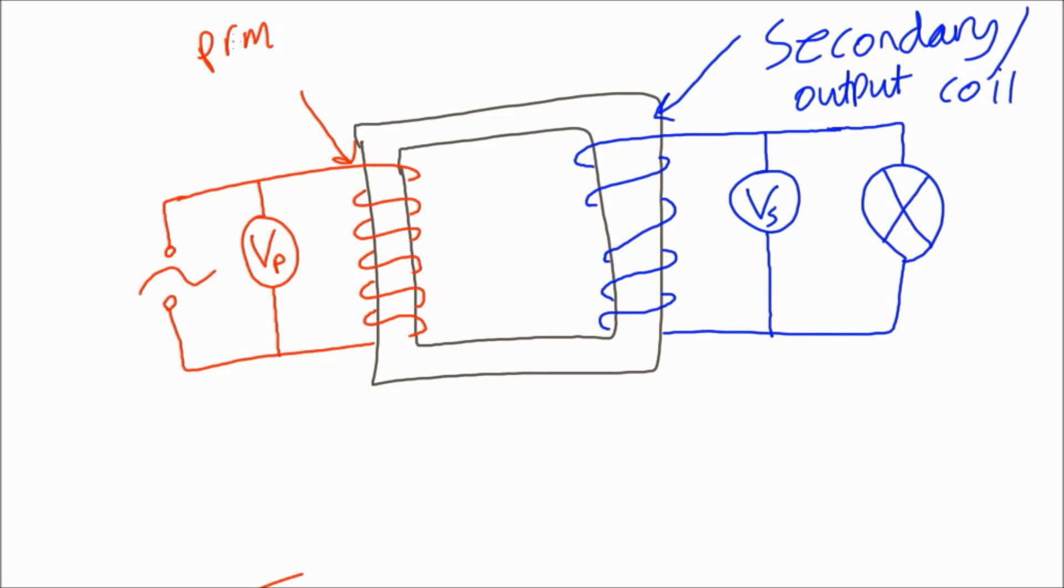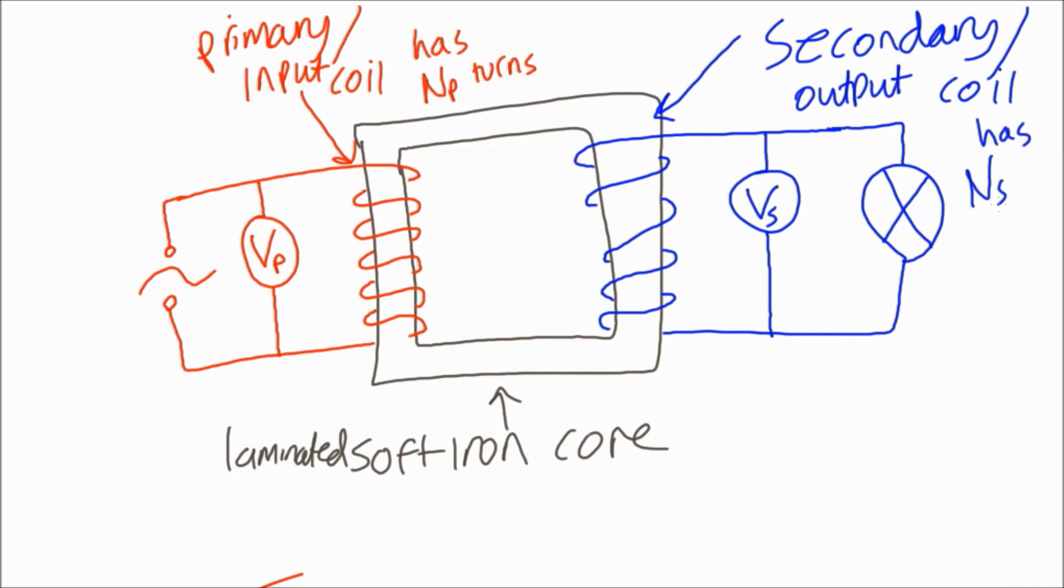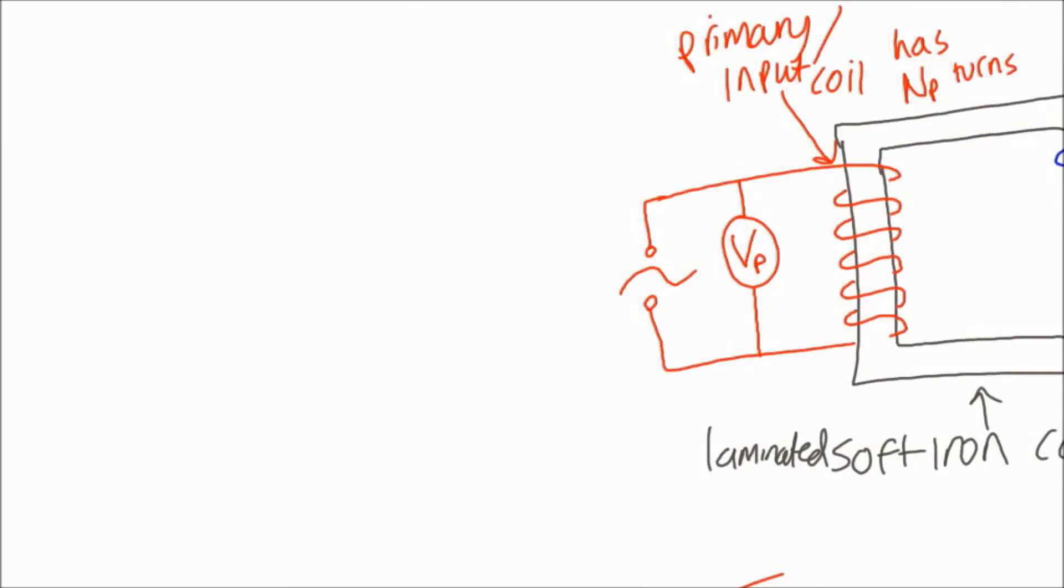Both coils are wrapped around the iron core, or the soft iron core, or actually the laminated soft iron core - we'll talk more about that later. Remember soft meaning it loses and gains its magnetism really easily. We've got NP number of turns on the primary and NS number of turns on the secondary.